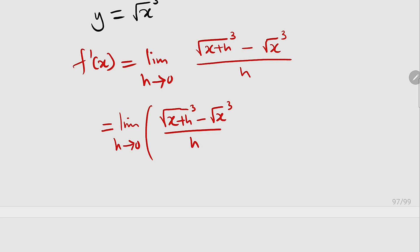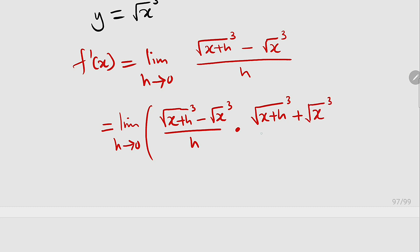I want us to multiply the top and the bottom of this function with the conjugate of the numerator. The conjugate of the numerator will be square root of x plus h to the power of 3, instead of minus we have plus, then square root of x to the power of 3. Then we divide by the same function: square root of x plus h to the power of 3, plus square root of x to the power of 3.